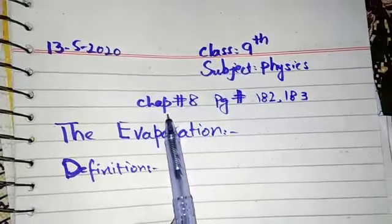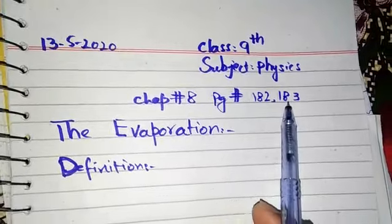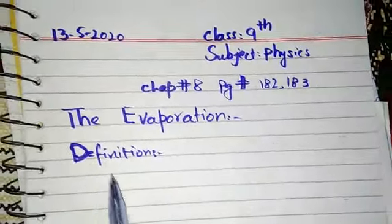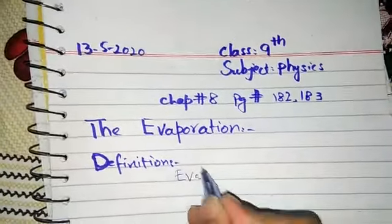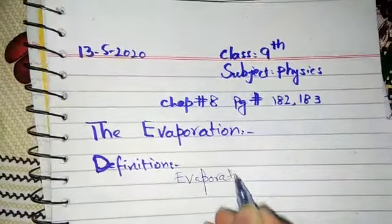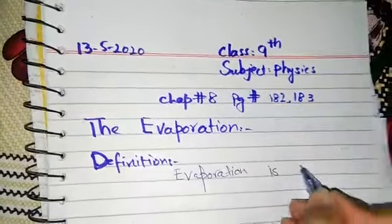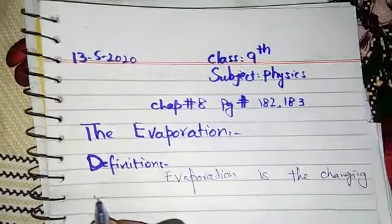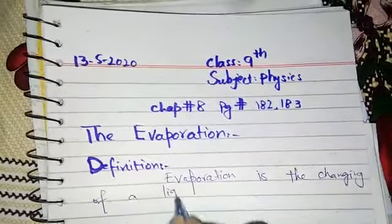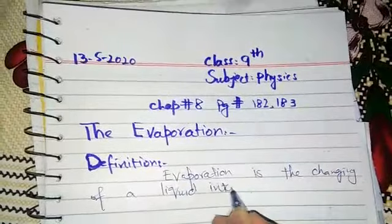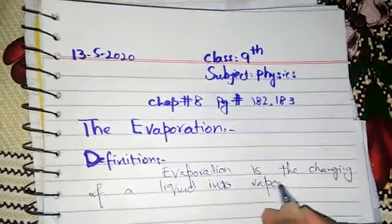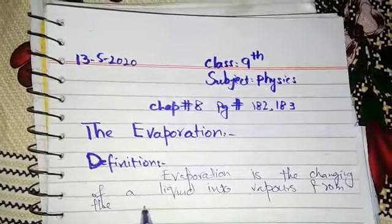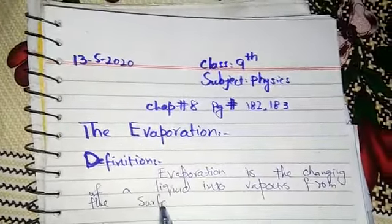Assalamu alaikum. Class nine, today we are doing chapter number eight, page number 182 and 183. Our first topic is evaporation. The definition of evaporation is: evaporation is the changing of a liquid into vapors from the surface of the liquid.